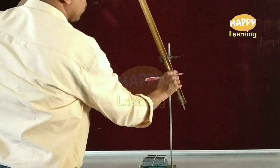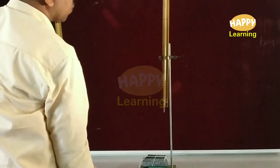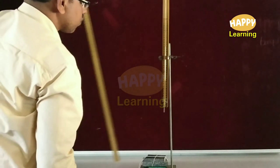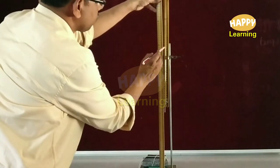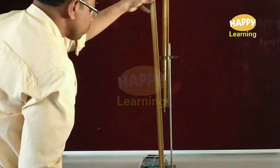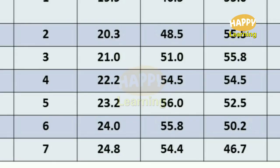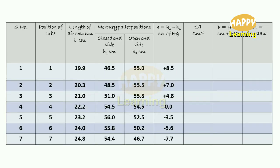Now the position of the quill tube is rotated so that it is vertical with the open end towards the ground. The length of the air column and heights of the mercury pellet h1 and h2 are noted, and these values L, h1, and h2 are written in the table. The difference in the mercury pellet readings — that is h2 minus h1 — is calculated and written in the table. The reciprocal of the length of the air column, that is 1/L, is also calculated and written in the table.